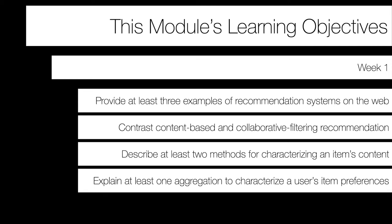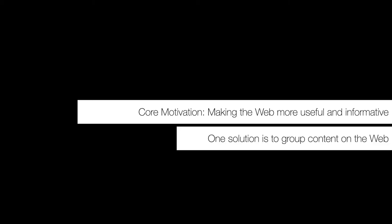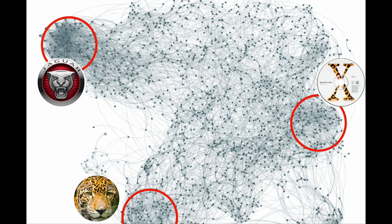We'll also talk about methods for characterizing item content. Since this week focuses on content-based recommendation, how do we characterize items based on their content? Once we have characterizations, how do we aggregate users' behaviors based on their interactions with previous items to characterize their preferences? Over the past several months, we've talked about making the web more useful and informative — one core way is to group content on the web through clustering and finding communities in networks.